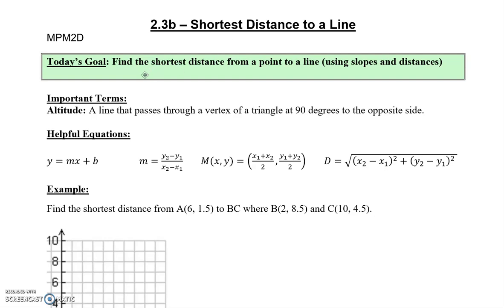I've kept one important term here for us to remember and that's an altitude. An altitude is a line that passes through a vertex of a triangle at 90 degrees to the opposite side. Let's see at the end of this how the altitude compares to the shortest distance to a line. We have all these helpful equations at our disposal: y equals mx plus b, the slope equation, the midpoint formula, and the distance of a line segment formula.